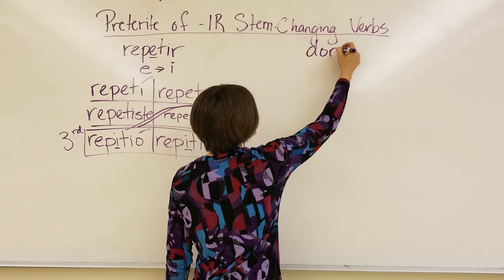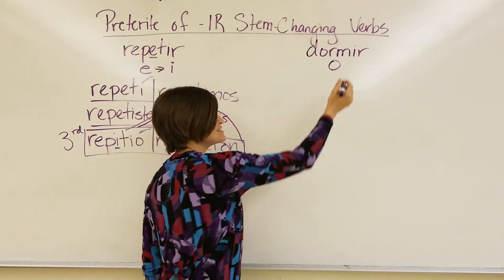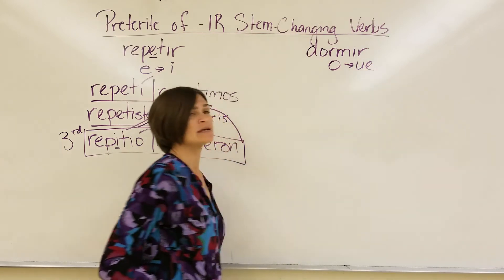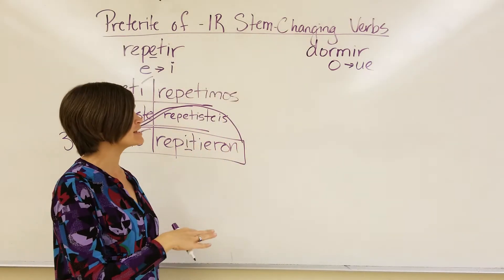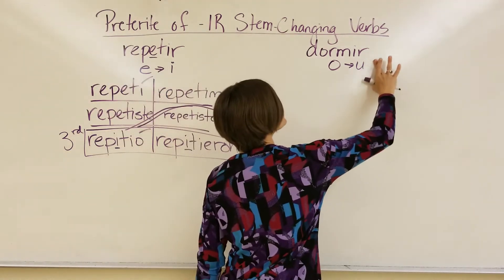Let's do an O. Let's say dormír, to sleep. Now, the O in the present tense changed from an O to UE. In the past tense, it's going to do exactly what it did in the I-N-G form. It changes from an O to a U.